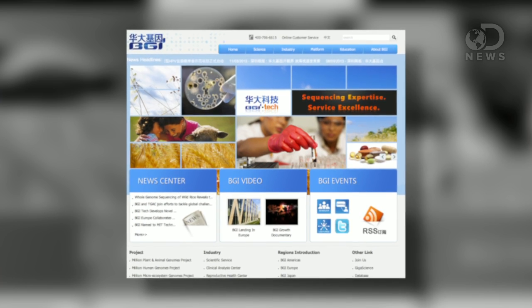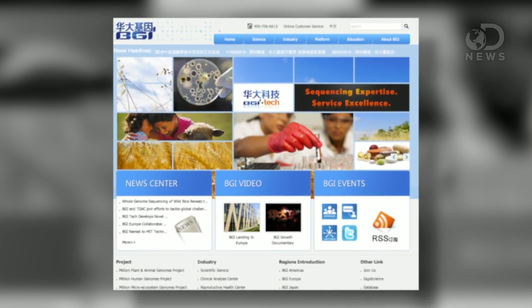The Vice piece revealed that a company called BGI is looking into the human genome to find the genes that control intelligence. They'll then be able to select the most intelligent sperm and egg from a couple and use that for their baby.